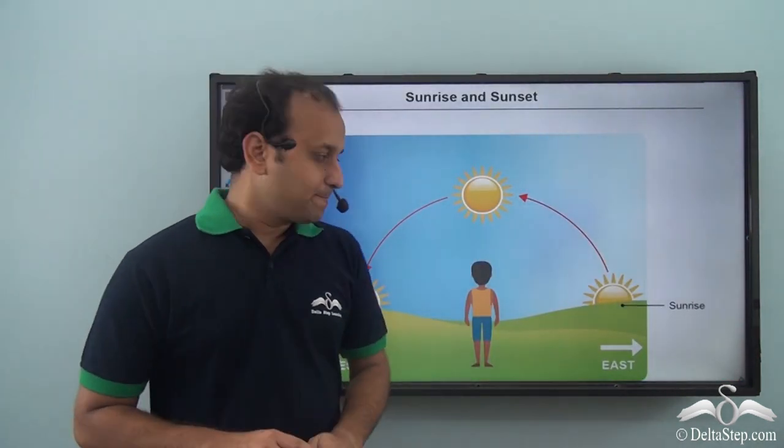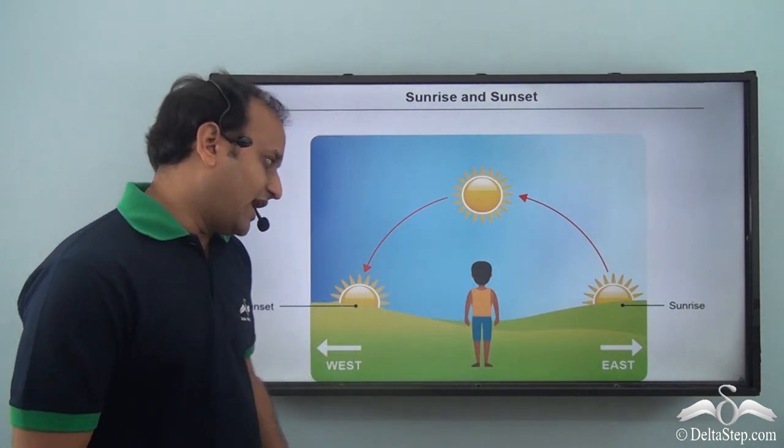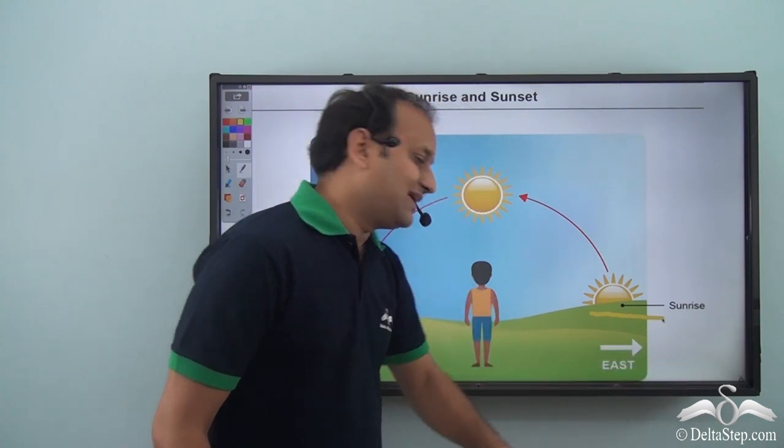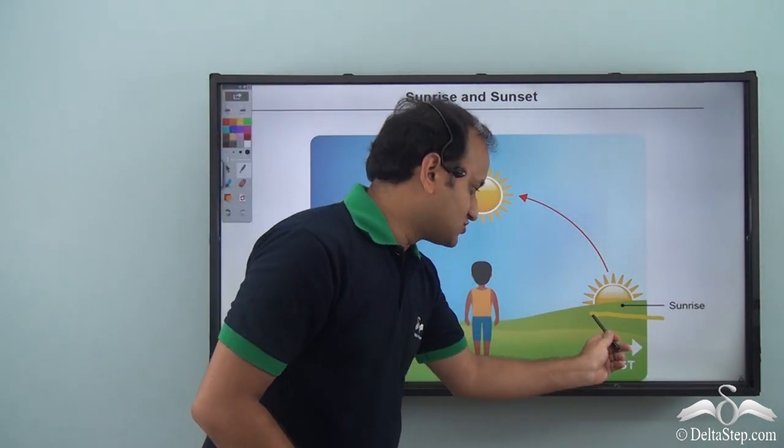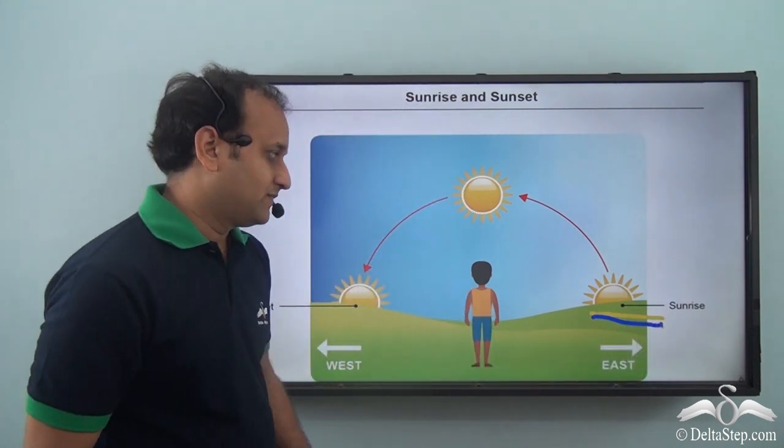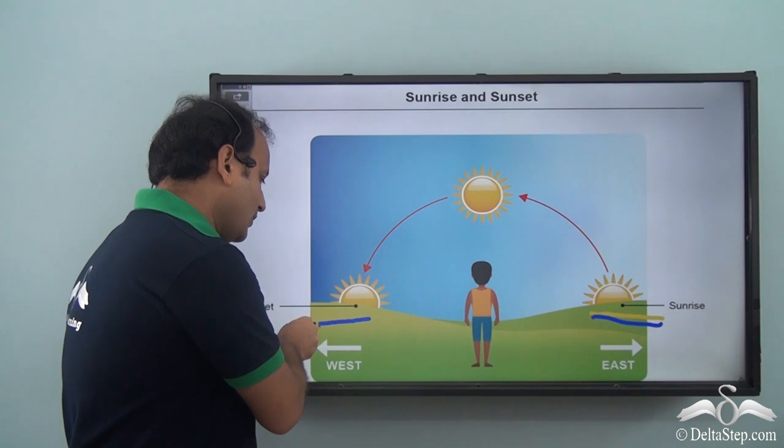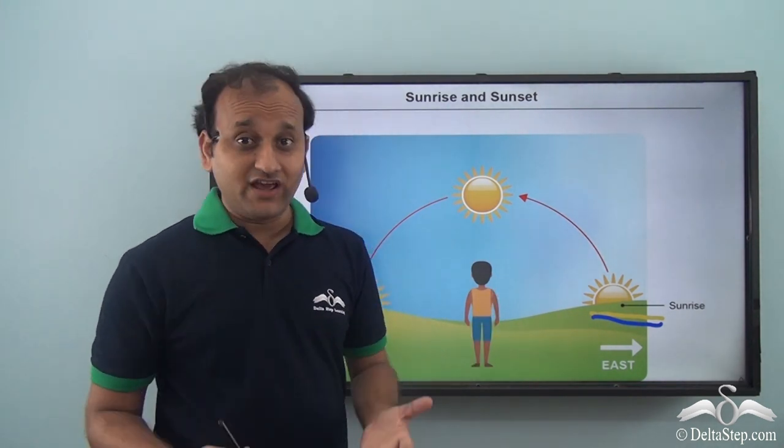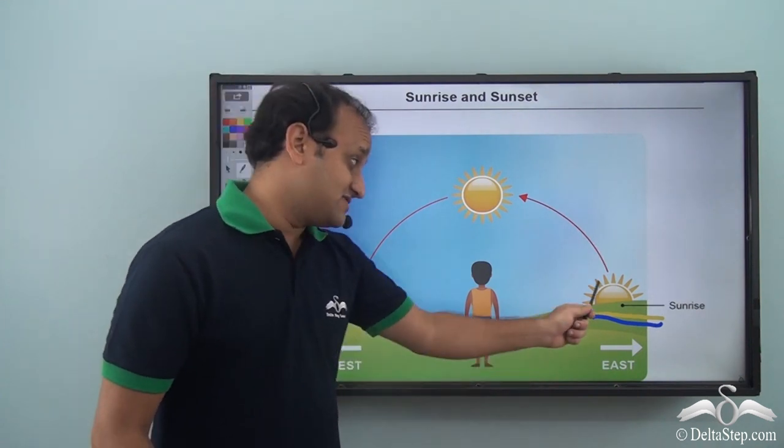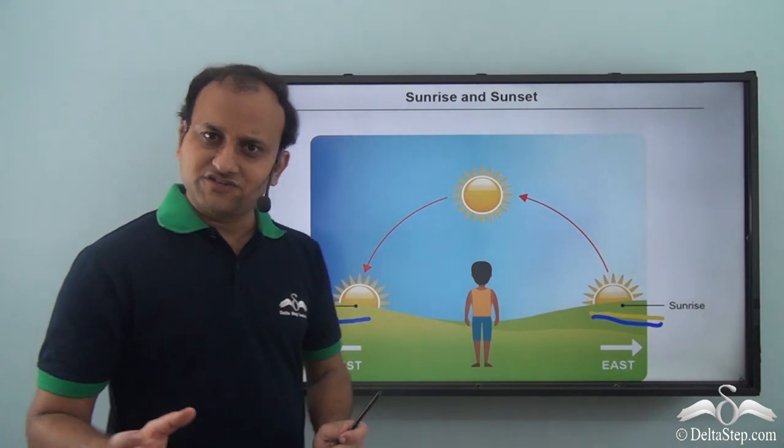So you see, if you stand here and the Sun rises in this direction, then this direction is what is called the east direction. And the direction in which sun sets, this is the west direction. Now these are constant. That is, everyday you will see that the Sun rises from a fixed direction and Sun sets in a fixed direction.